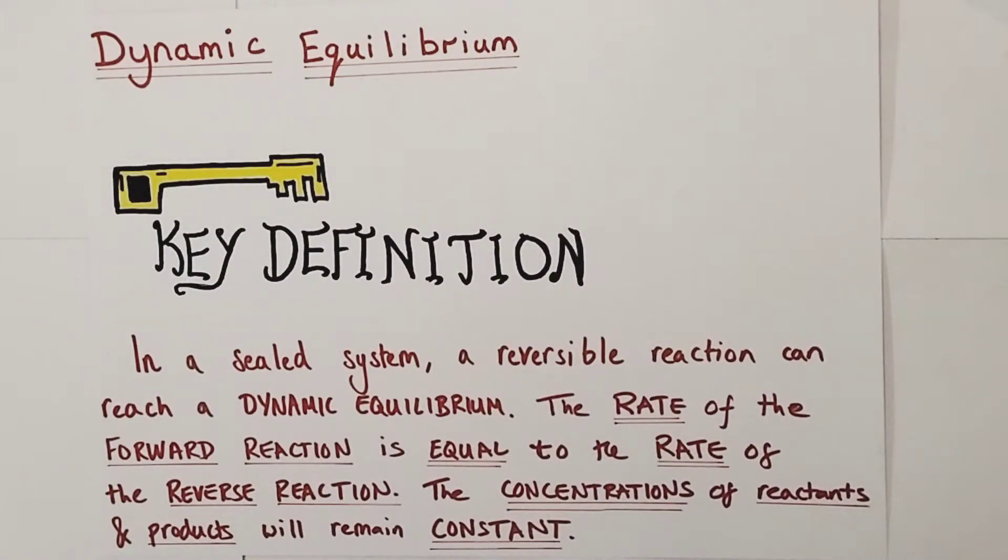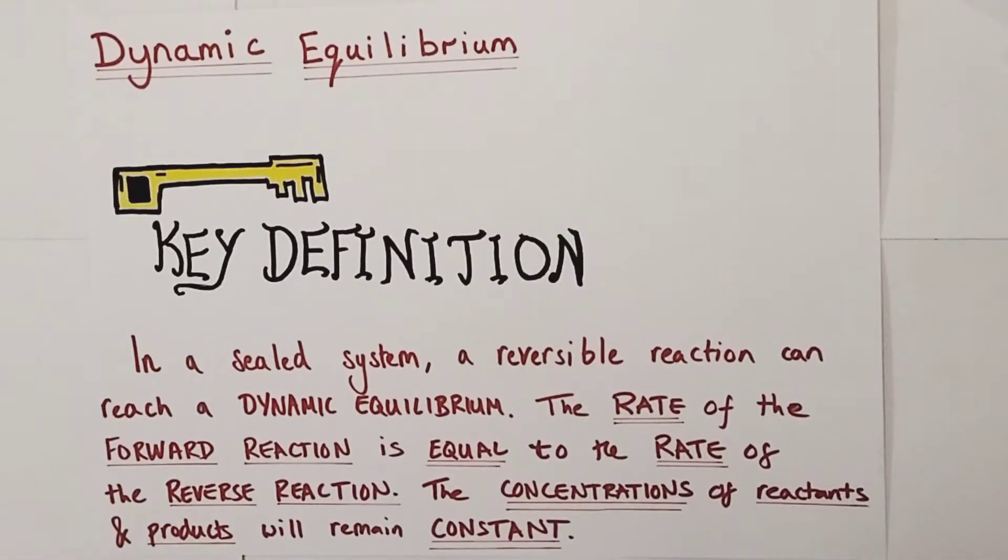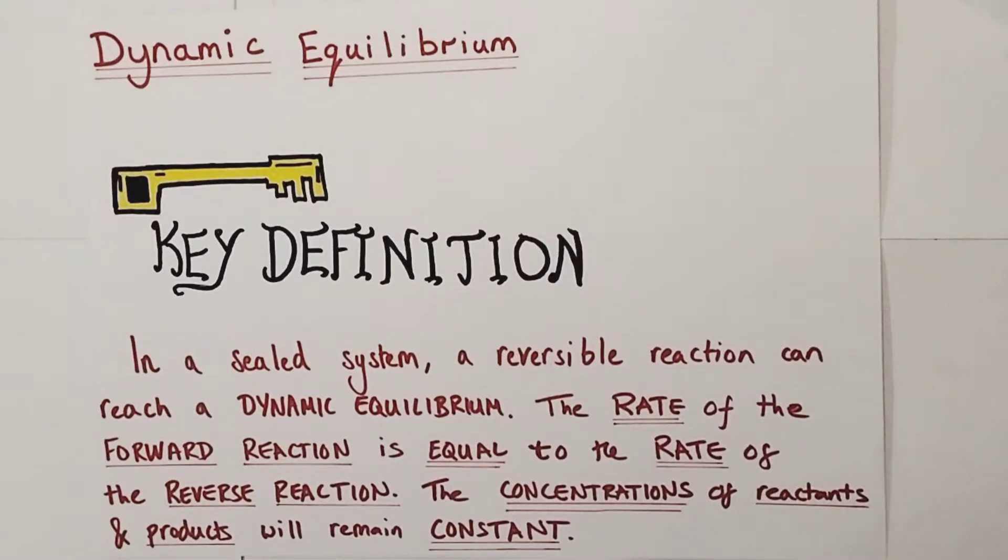Hi there, welcome to this Alchemist Chemistry video looking at the principles of dynamic equilibrium in the context of chemical reactions. Now the term equilibrium probably brings up the idea of balance in most people's minds, but I'm going to try and give you a really clear definition of dynamic equilibrium in a chemical context and then give you a really simple initial example of a situation where you might experience a dynamic equilibrium in the home. So let's start with the key definition of exactly what a dynamic equilibrium actually is.